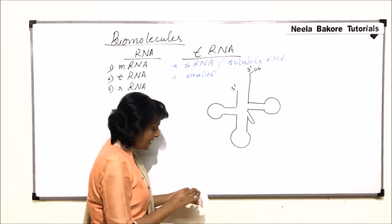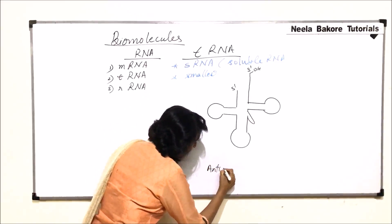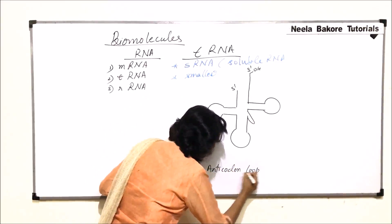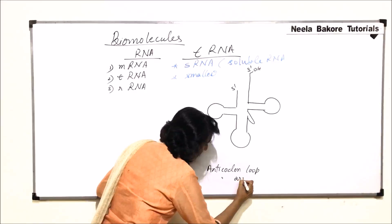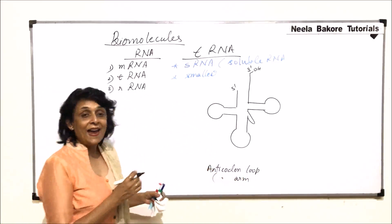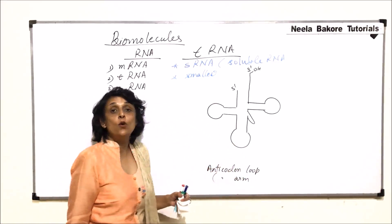The lower most part is or this loop is known as anticodon loop or arm. Anticodon arm. This is another term given to it. Now when we are talking of anticodon that means it has anticode.